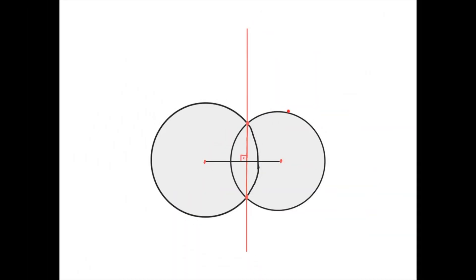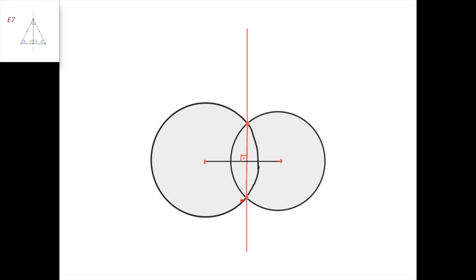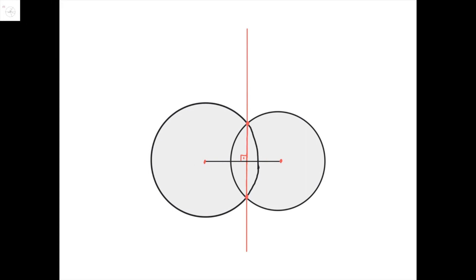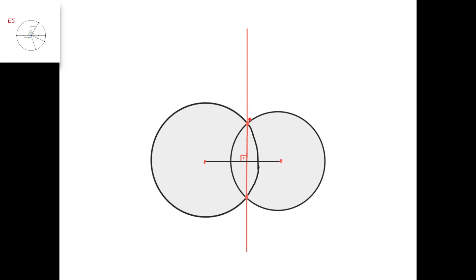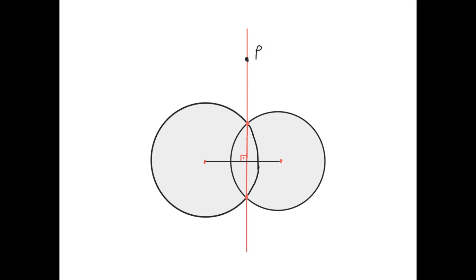The easiest case is when the two circles intersect at two points. Both intersection points have power zero with respect to both circles, so the line through these two intersection points must be the radical axis. It is indeed perpendicular to the line defined by the two centers, because the two intersection points are symmetric with respect to that line — we have isosceles triangles on both sides.